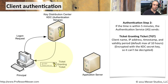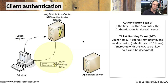When the KDC receives the encrypted authentication request, it decrypts it using the client's password hash and checks that the timestamp encrypted inside is within a five-minute window — so this process is very time-sensitive. If everything checks out, the KDC sends back a Ticket Granting Ticket (TGT). This ticket contains a client name, IP address, timestamp, and a validity period after which you must re-authenticate. The TGT is encrypted with a secret key belonging to the KDC, meaning the client cannot decrypt it.